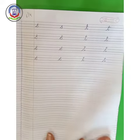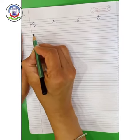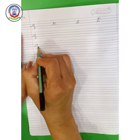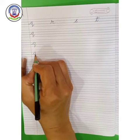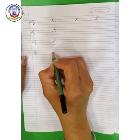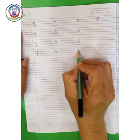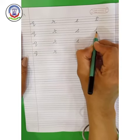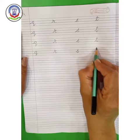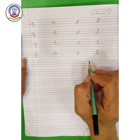Now kids, turn your page. We will write order-wise from small cursive Q to small cursive T: small cursive Q, small cursive R, small cursive S, small cursive T. In this way, kids, you have to complete these pages in your notebook.